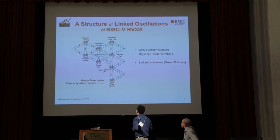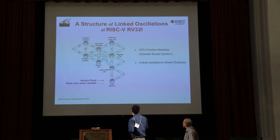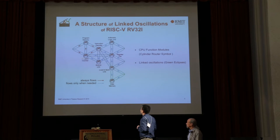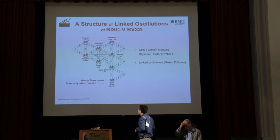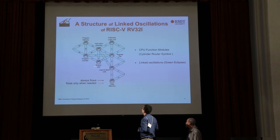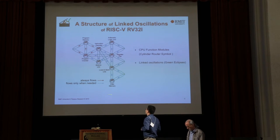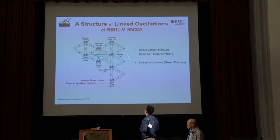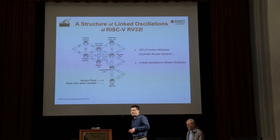This is the structure of linked oscillations of RISC-V RV32i. The router symbols represent the CPU function modules. Just like normal micro-architecture, we have program memory, instruction decoder, program counter, arithmetic logic unit, register file, branch unit, load store unit, and data memory. This yellow arrow always flows. And this blue arrow flows only when needed — it depends on instruction.